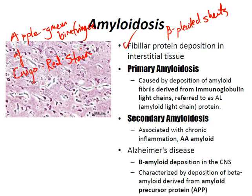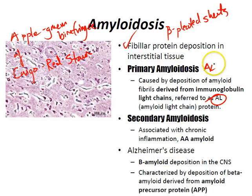Amyloidosis is characteristically extracellular in distribution, most often appearing as accumulations proximate to the basement membrane. Primary amyloidosis is caused by the deposition of amyloid fibrils derived from immunoglobulin light chains, referred to as AL — amyloid light chain protein.